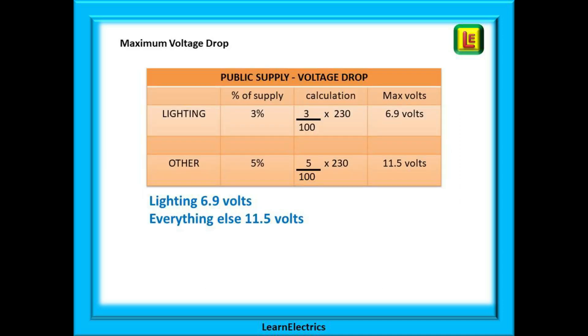We need to know the maximum voltage drop in volts, not in percentages. For lighting, three percent is found by dividing three by a hundred and multiplying by 230 volts, and the answer that pops out of the calculator is 6.9 volts maximum. Do the same for the other circuits and we have five divided by 100 and multiplied by 230, giving us a maximum of 11.5 volts for all non-lighting circuits. Now that we know the maximum voltage drops, we will have something to compare our actual results to.